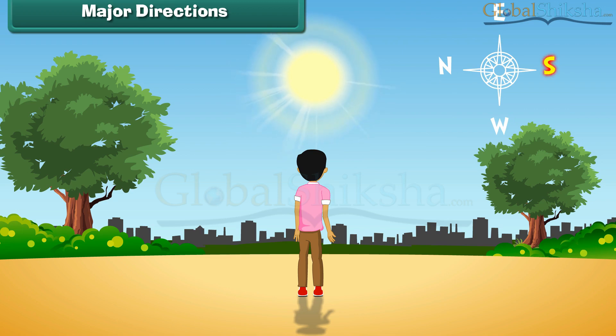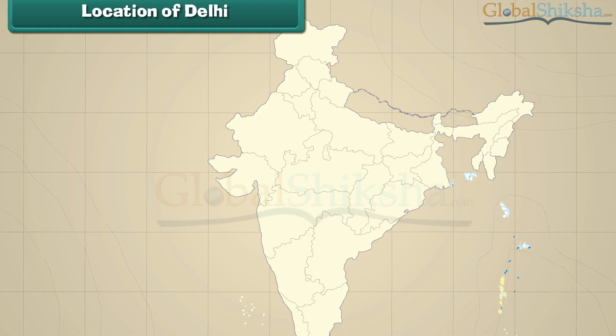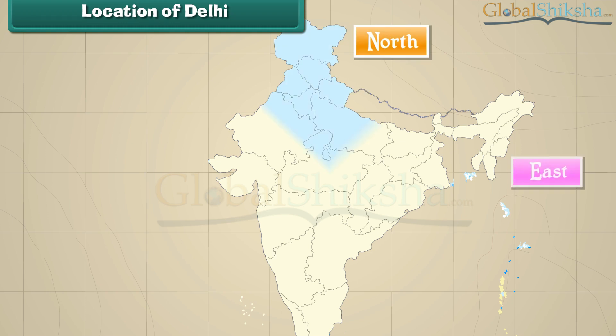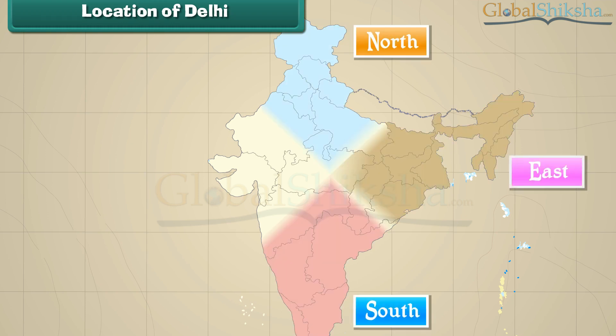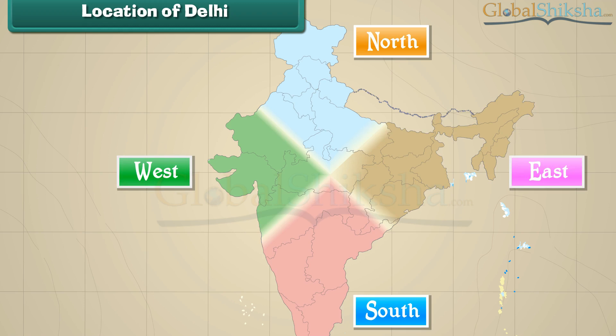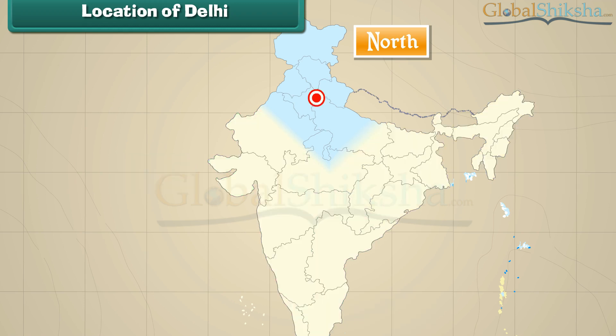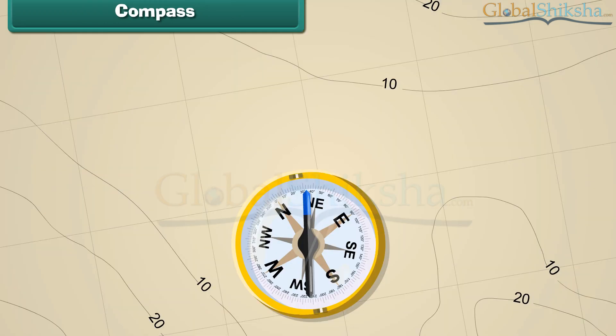Location of Delhi. This is the map of India. The four major directions — north, east, south, and west — are marked on the map. Delhi is the capital of India. It is located in the north of India.